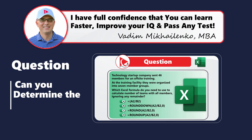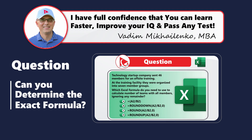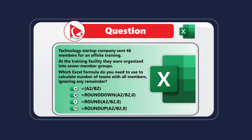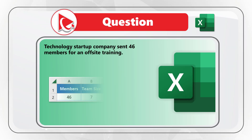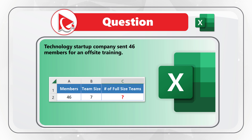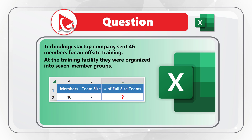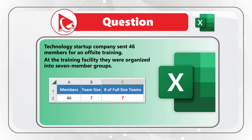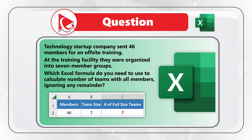Here's a very interesting question to test your knowledge of rounding in Microsoft Excel. A technology startup company sent 46 members for an off-site training at a training facility. They were organized into seven-member groups. Which Excel formula do you need to use to calculate the number of teams with all members, ignoring any remainders?